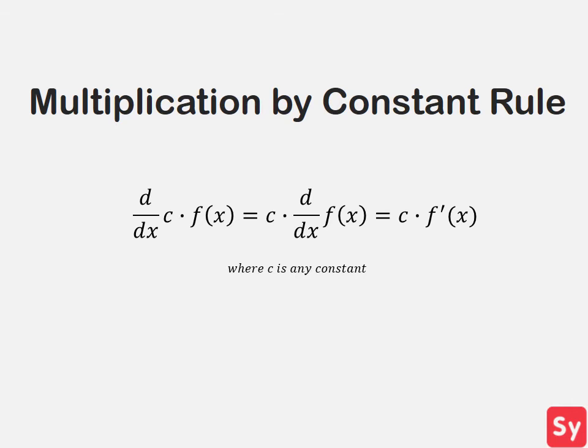The multiplication by a constant rule says that when you take the derivative of a constant times a function, it is equal to the constant times the derivative of that function. Simple enough, let's see some examples.